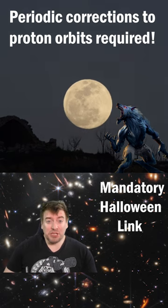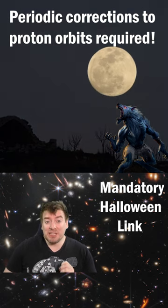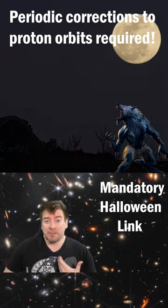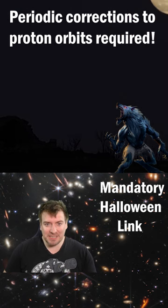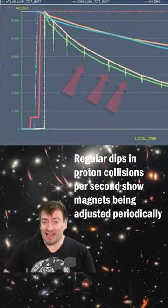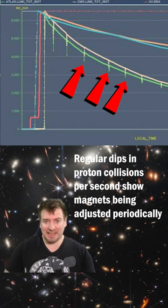As the moon rises in the sky, its forces change just enough that there needs to be a periodic correction to the magnetic fields guiding protons at the LHC. These corrections show up as regular dips in the number of collisions per second as the magnets are being adjusted.